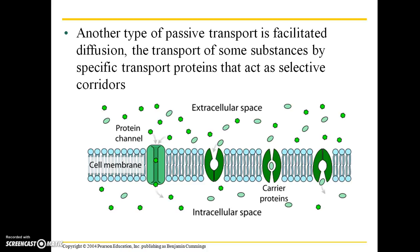Another type of passive transport is facilitated diffusion, which is the transport of some substances by specific transport proteins that act as selective corridors. Here we have the extracellular space — the area outside of a cell — and here we have the intracellular space, within a single cell in your body. Here we have the cell membrane composed of that phospholipid bilayer. These proteins span the length of that bilayer and assist certain molecules in entering and exiting the cell. We have protein channels, which are basically canal-like or channel-like. And then we have carrier proteins, which accept molecules and spit them out on the other side of the cell.